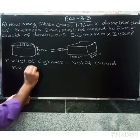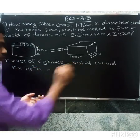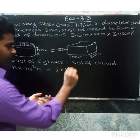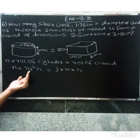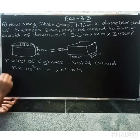n into pi r squared h equals volume of cuboid which is l into b into h. So first we find the radius of cylinder.